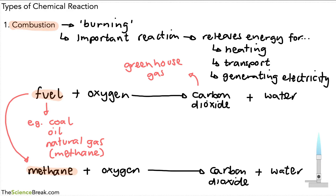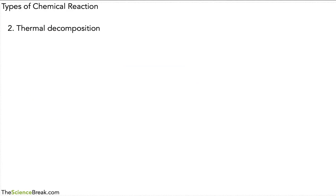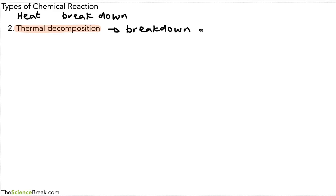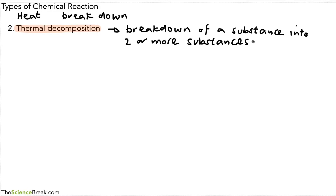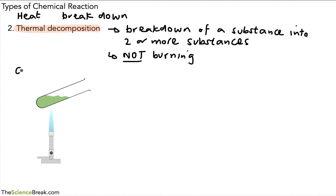The next type of chemical reaction we're going to look at is called thermal decomposition. The word 'thermal' is often used in science and relates to heat. 'Decomposition' usually means the breakdown of a chemical. So thermal decomposition is the breakdown of a substance into two or more other substances. Please remember: this is not burning. Thermal decomposition is not the same as combustion — burning is when something actually catches fire; this is heating.